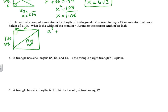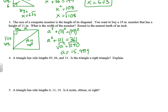So a squared plus 11 squared equals 19 squared. That gives a squared plus 121 equals 361. Subtracting 121, we get a squared equals 240. This one says round to the nearest tenth of an inch, so we take the square root of 240 in our calculator. That is approximately 15.4919, so the width rounded to the nearest tenth would be 15.5 inches.